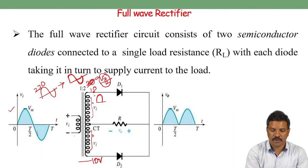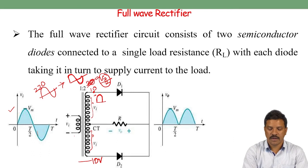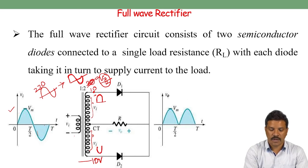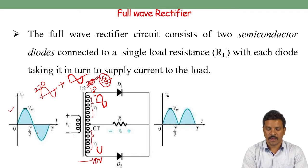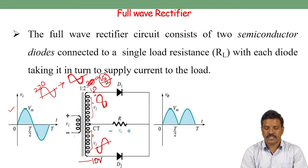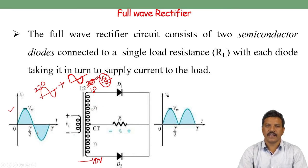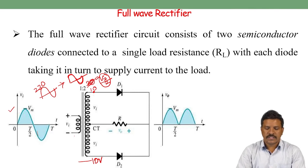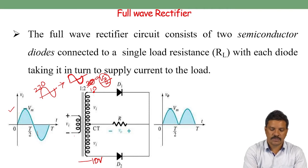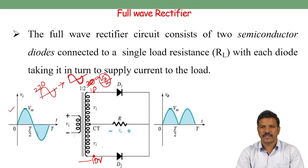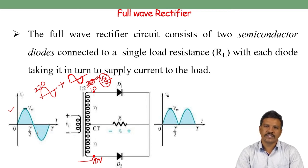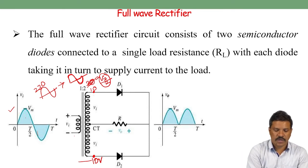During the positive half cycle, 10 volts is available across the upper secondary coil, and at the same time, negative 10 volts is available at the lower secondary coil. During the negative cycle of the input signal, minus 10 volts appears at the upper coil while positive 10 volts appears at the lower coil. So the upper and lower voltage waveforms are 180 degrees out of phase — this is the key characteristic of the center tap transformer.